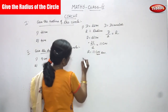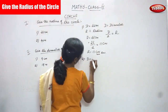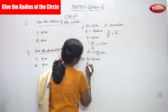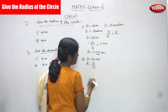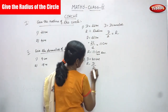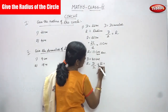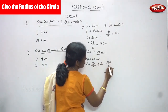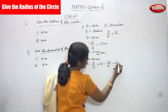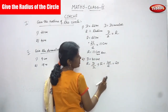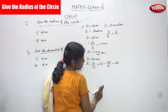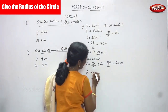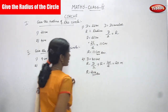Next question. The next one is 40 m. D is equal to 40 m. We have to find out R. What is the formula? D by 2 — that means diameter divided by 2. R is equal to D by 2. The value of D is 40. 40 divided by 2, you can get 20. So, 2 into 20 gives 20 meter. R is equal to 20 meter. This is the right answer.